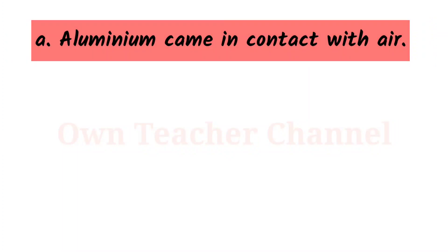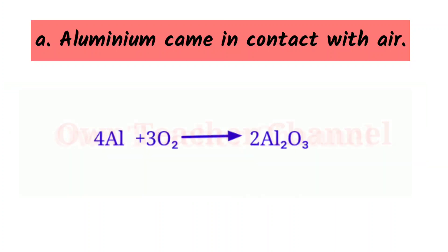Question 9: Write chemical equations for the following events. Aluminium came in contact with air: Aluminium is easily attacked by air and starts reacting with oxygen. It burns with a bright white flame to change into aluminium oxide.